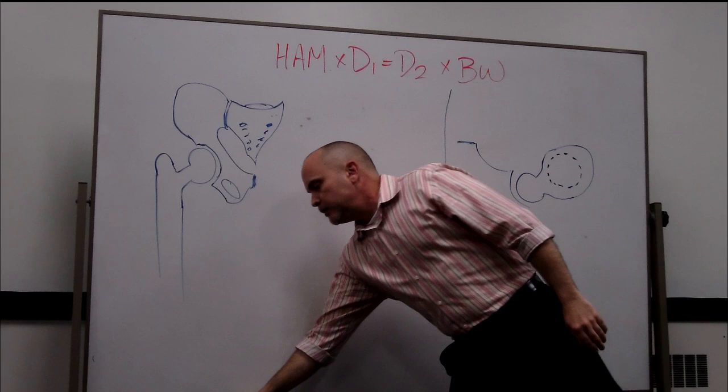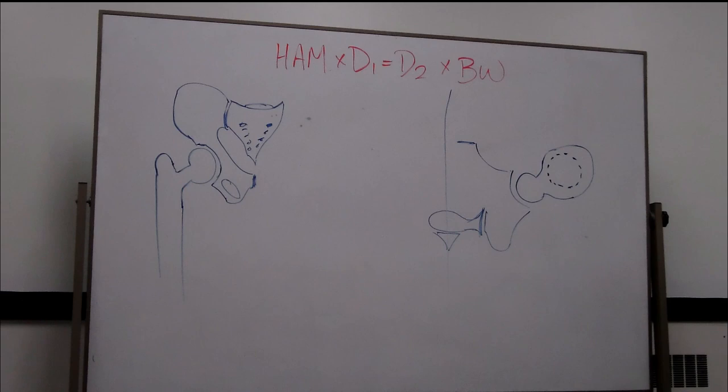Hip abductor moment times D1 lever arm should equal D2 lever arm times body weight.